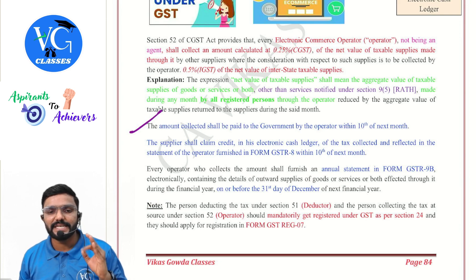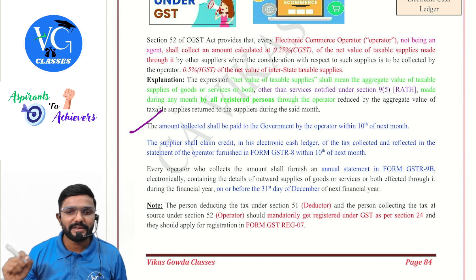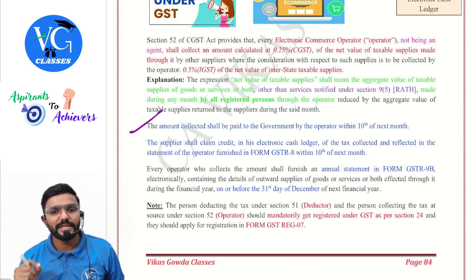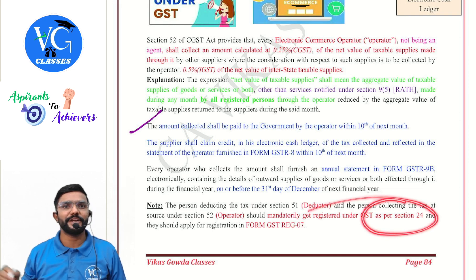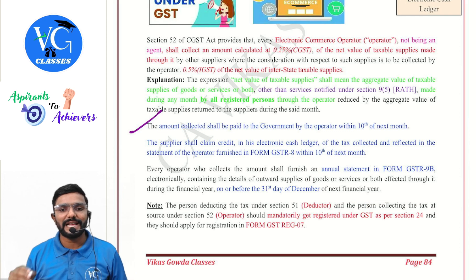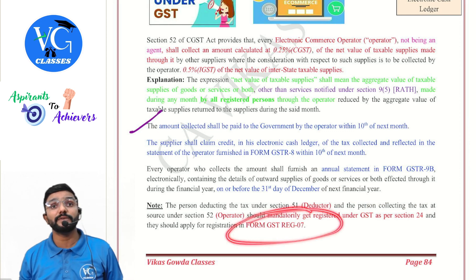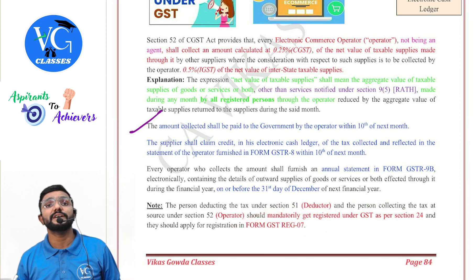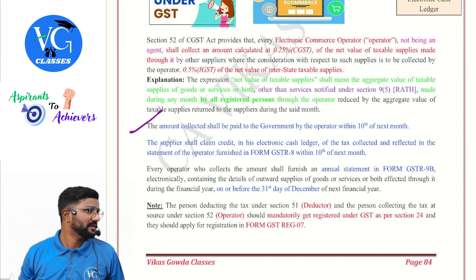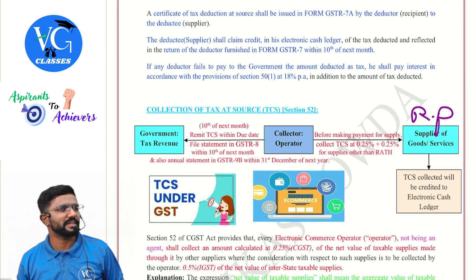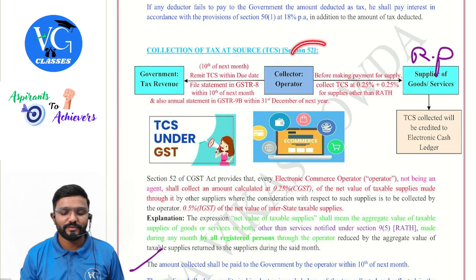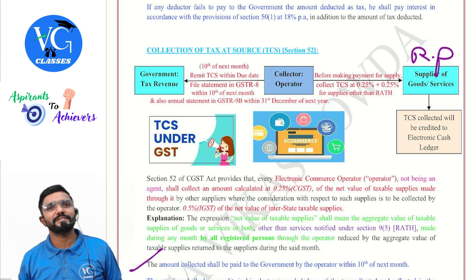Note on registration: the person deducting tax under section 51 — the deductor — and the person collecting tax at source under section 52 — the e-commerce operator — shall mandatorily get registered under GST as per section 24. Both of these persons have to apply for registration not in REG-1 but in REG-7. This applies to both the TDS deductor and the TCS collector.